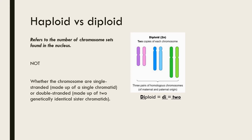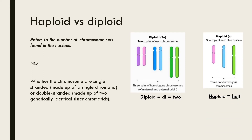A haploid cell on the other hand only contains one copy of each chromosome and thus has half the diploid number.